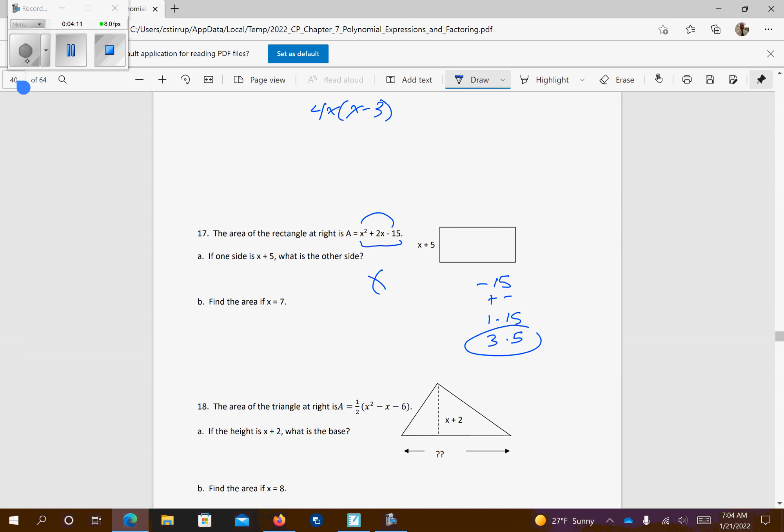So I'm going to get x squared, let's see, this one's positive, this one's negative, plus 5x minus 3x minus 15, so I get x, factor out a negative 3, that gives me x plus 5, so I have x plus 5 and x minus 3, so what is the other side? The other side is x minus 3, that's up here.